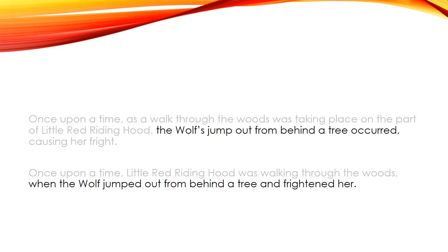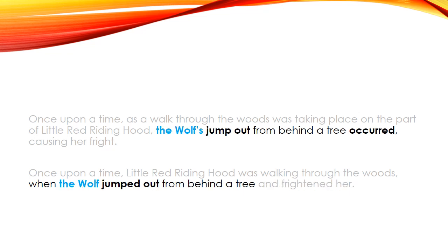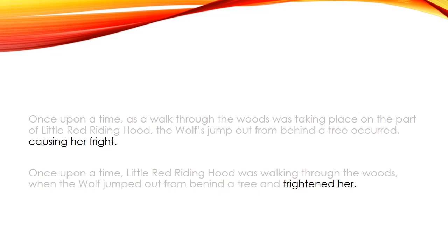Now the second part: 'The wolf's jump out from behind a tree occurred, causing her fright' versus 'the wolf jumped out from behind a tree and frightened her.' In the first version, the jump is the thing that 'occurs,' and the wolf is the one doing it — but rather than saying 'the wolf's jump occurred,' which hides the action and actor, we say 'the wolf jumped out from behind a tree.' Finally, 'causing her fright' versus 'frightened her' — the action of frightening is obscured by 'causing her fright,' and it's the wolf that frightened her, not the jump. So 'the wolf frightened her' is much more direct.